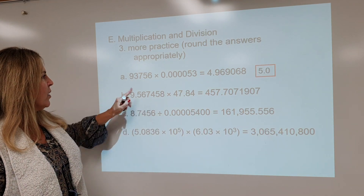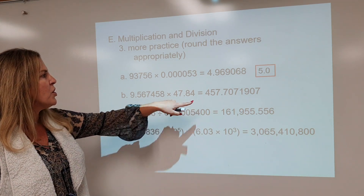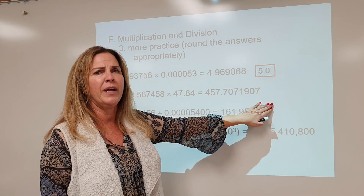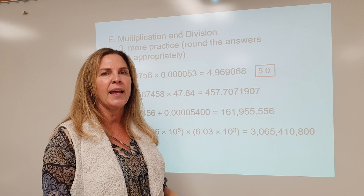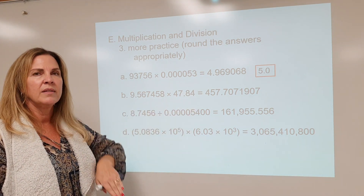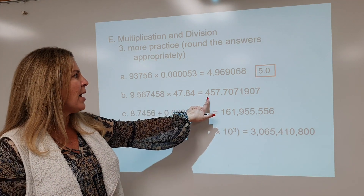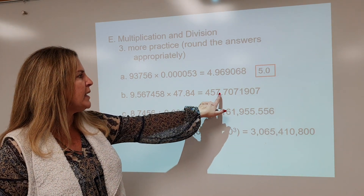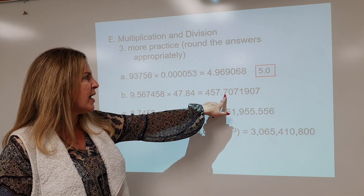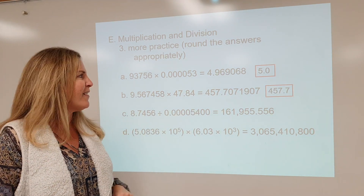Let's take a look at this one. We have seven significant figures versus four significant figures, and we got this giant number over here. How many significant figures should be in that answer? Seven sig figs, four sig figs — hopefully you said four. So let's count it out: one, two, three, four. That's a zero — it's not going to change that seven. Our final answer is 457.7.